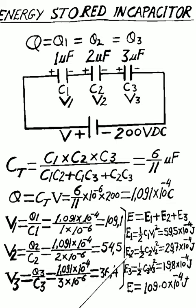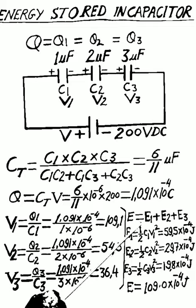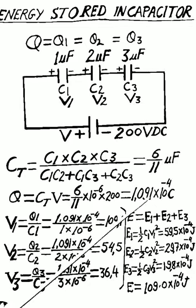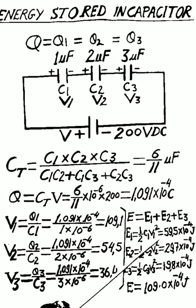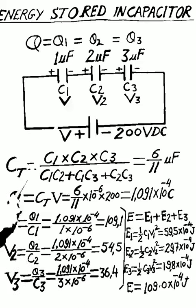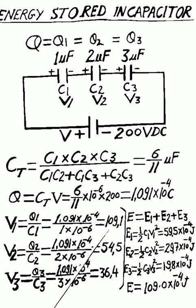V1 equals 109.1V, V2 equals 54.5V, and V3 equals 36.4V. Total energy E stored in all three capacitors equals E1 plus E2 plus E3. Energy stored by capacitor C1 is E1 equals one-half times C1 times V1 squared, equal to one-half multiplied by 1 microfarad multiplied by 109.1 squared.